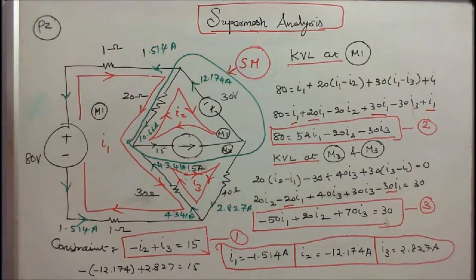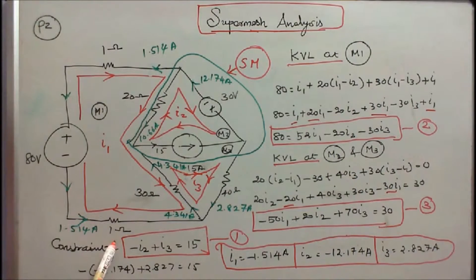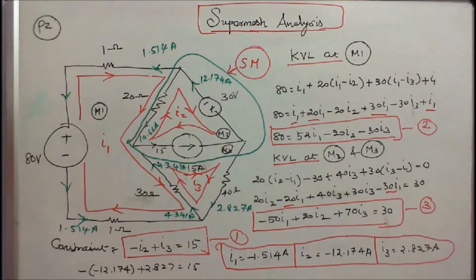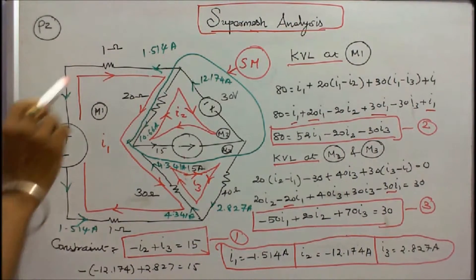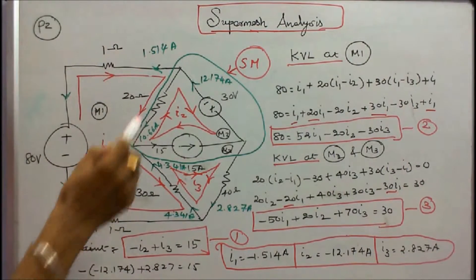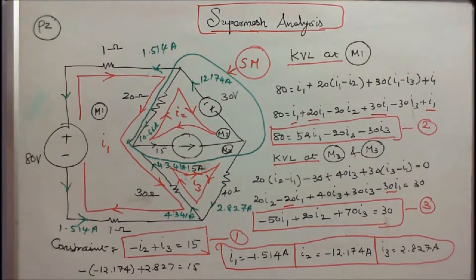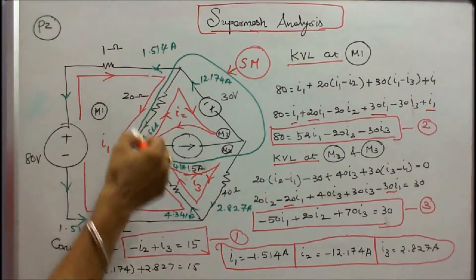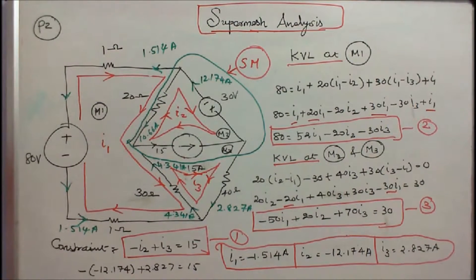Problem number 2: five resistors — 1 ohm, 20 ohm, 30 ohm, 40 ohm, 1 ohm — two voltage sources of 30 volts and 80 volts, and one current source of 15 amps, are connected as shown in the figure. The question is: find the mesh currents I1, I2, I3 with clockwise direction in all three meshes M1, M2, M3. I can't apply Kirchhoff's voltage law because the 15 amp current source is connected between M2 and M3, hence I consider this as a super mesh. The constraint is minus I2 plus I3 equals 15. This is equation 1.